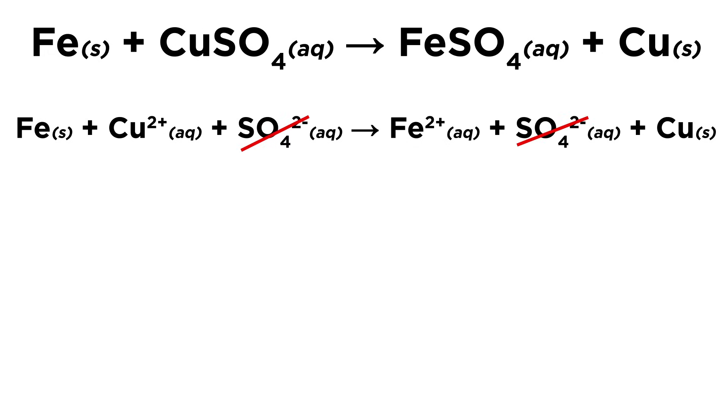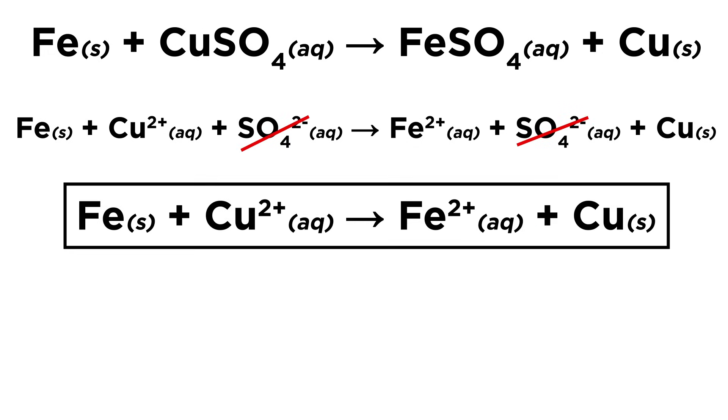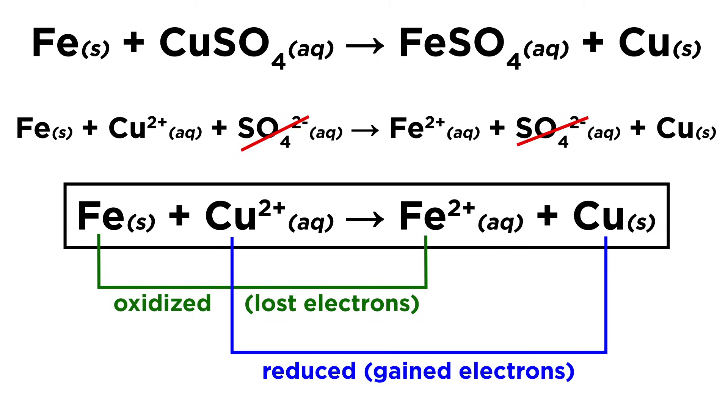The sulfates cancel and we see that the only chemistry that has occurred is that two electrons are transferred from iron to copper. Iron has lost electrons so it has been oxidized. Copper has gained electrons so it has been reduced.